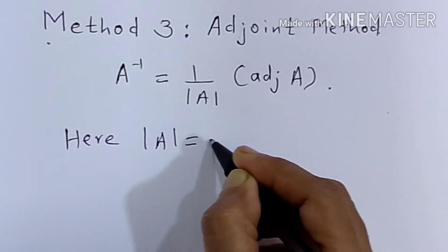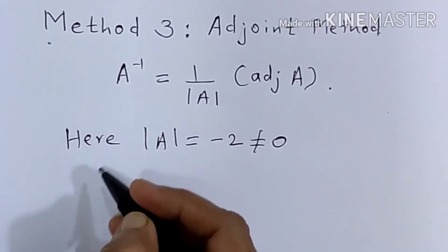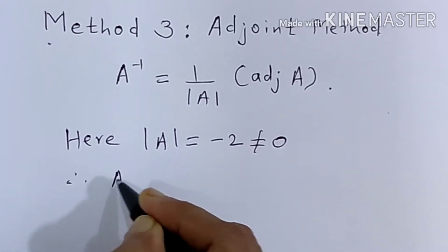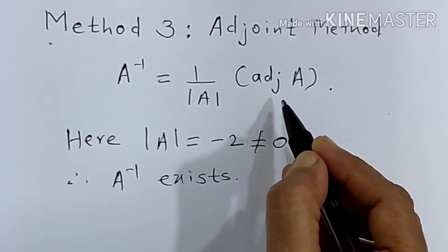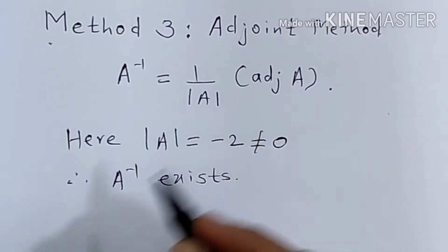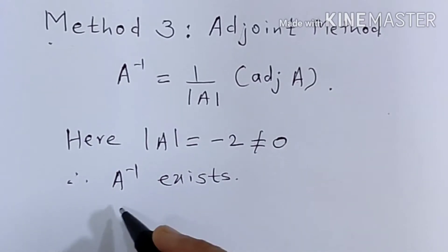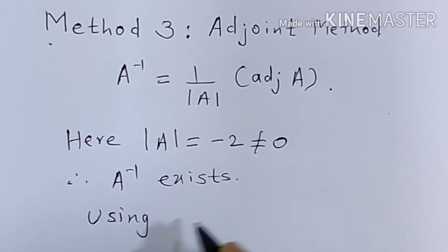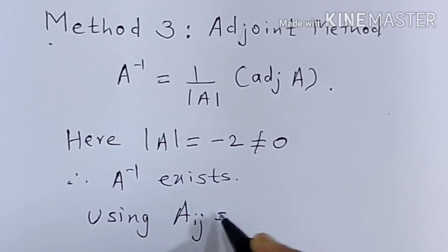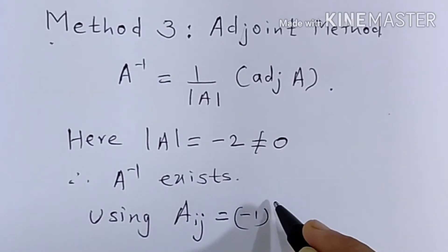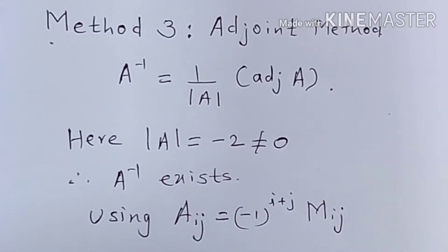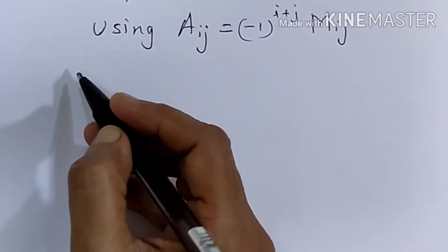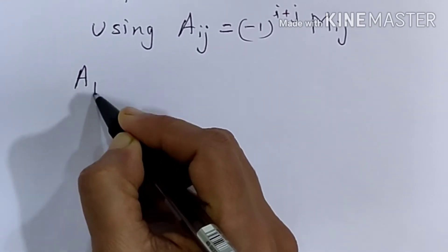The determinant of A is equal to minus 2, which is not equal to 0, therefore A inverse exists. Now we want to find the adjoint of A, so we require the cofactors. The formula for cofactors is: A_ij is equal to minus 1 raised to i plus j, into M_ij, where M_ij is the minor determinant. So we will have to find all cofactors.